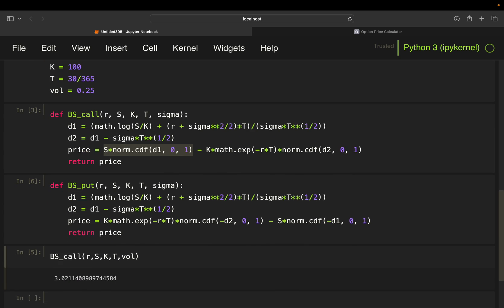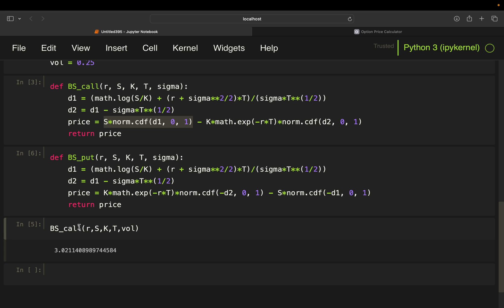So, if we would execute that and change that to put here, we would get the put price here with these assumptions.